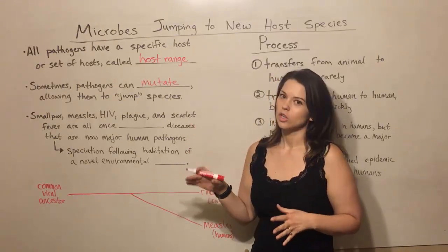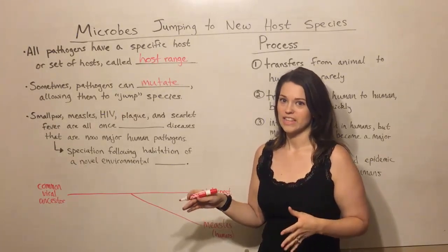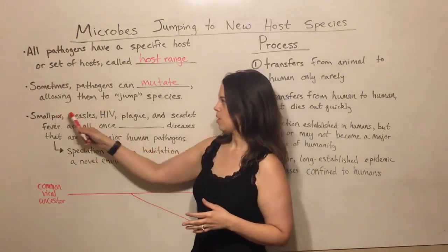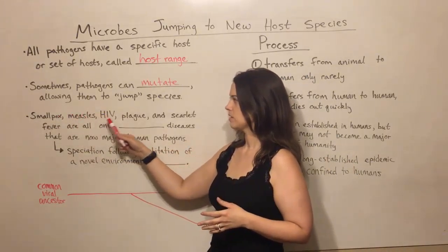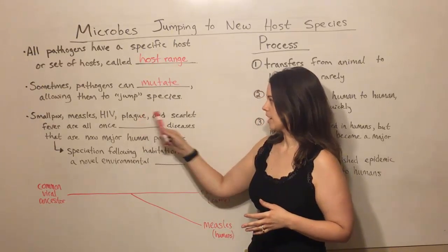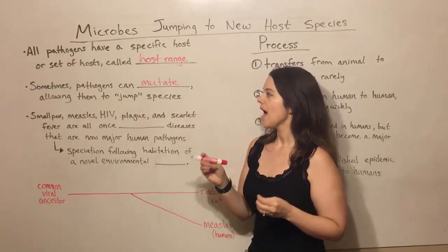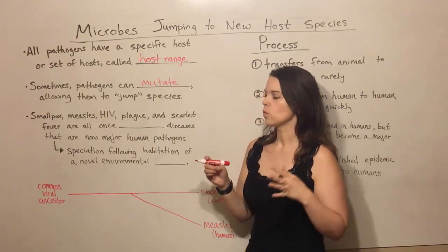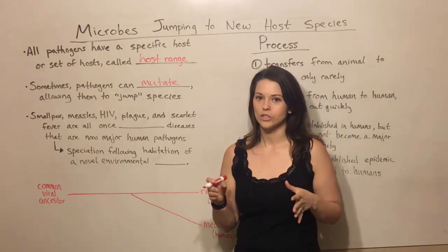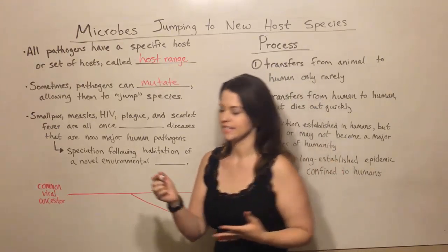There are a lot of diseases that you've heard of that have actually done this in the past — things like smallpox, measles, HIV, bubonic plague, scarlet fever. These are all pathogens that once upon a time were actually what we call zoonotic diseases.